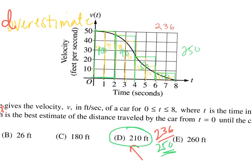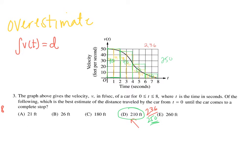So 210 has got to be the answer. It looks like what you're being assessed on here is how to take Riemann sums, how to check a couple options, knowing that your options are overestimates. Since these are overestimates, the answer cannot be 260 but does have to be closer to 210.